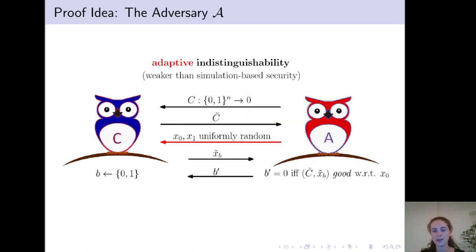More precisely, to define A, we need to define a carefully crafted circuit C that maps all input strings to the constant bit 0. And the adversary then chooses X0, X1 uniformly at random and decides whether to output the bit 0 or 1 depending on some good predicate. Clearly, it is crucial to define the circuit C and good predicate such that the adversary indeed succeeds and breaks the garbling scheme.